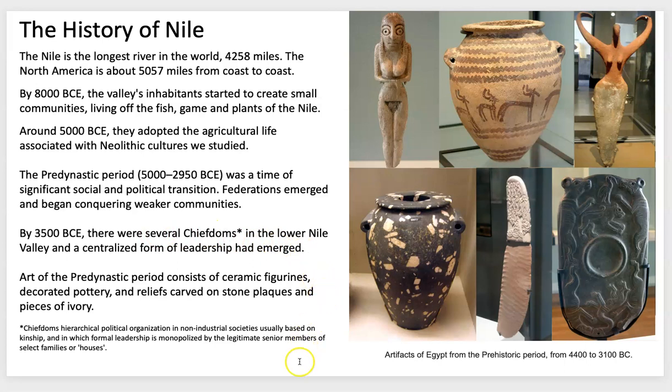They started having social and political transformations, creating communities and having more of a sense of group and responsibility. There were several chieftains along the Nile Valley area. Chieftains would have been acknowledged leaders of houses and families — people educated to a certain level, perhaps medicine men and priests. Their families formed the lineage that would eventually unfold into the pharaohs and kings. Here are some examples of art from the prehistoric period in Egypt.